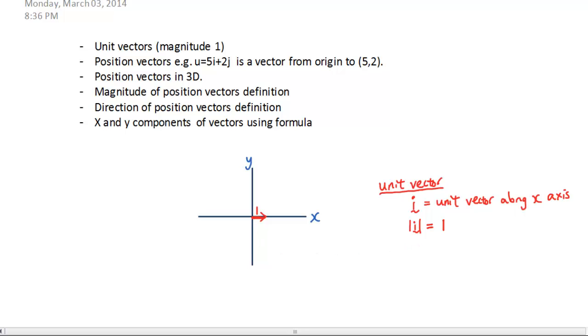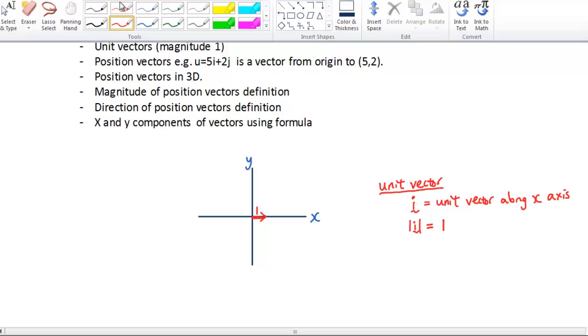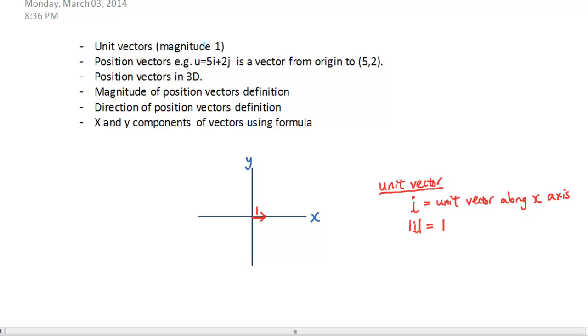Another unit vector you need to know is a vector along the y-axis. I'll draw it with a different color. It's going up in the vertical direction, has a magnitude of 1, and the symbol for it is j. j is the unit vector along the y-axis, and obviously the magnitude of j is 1 as well.